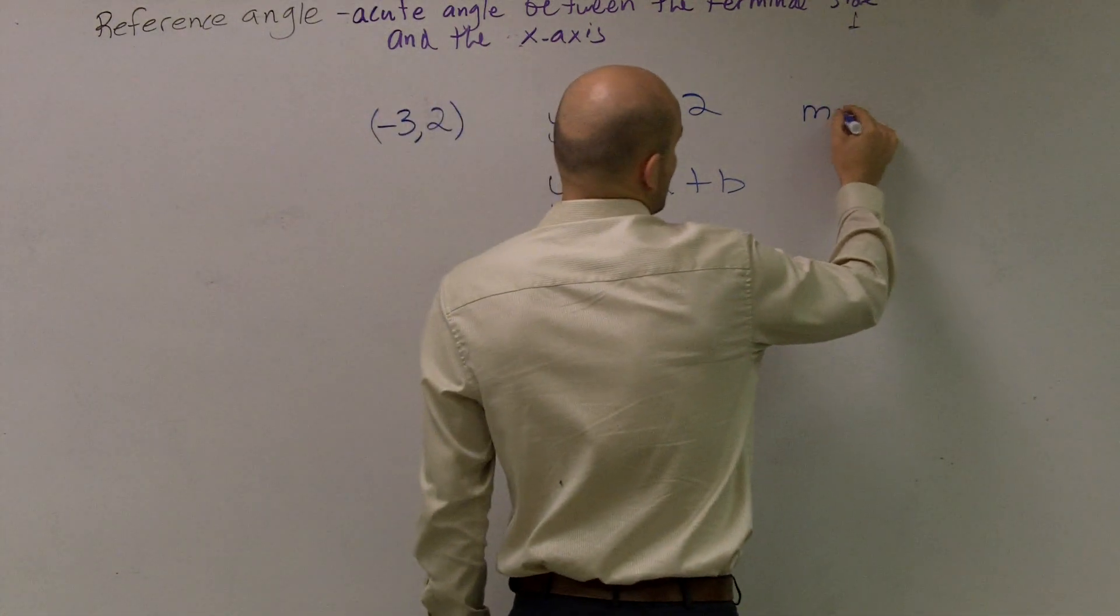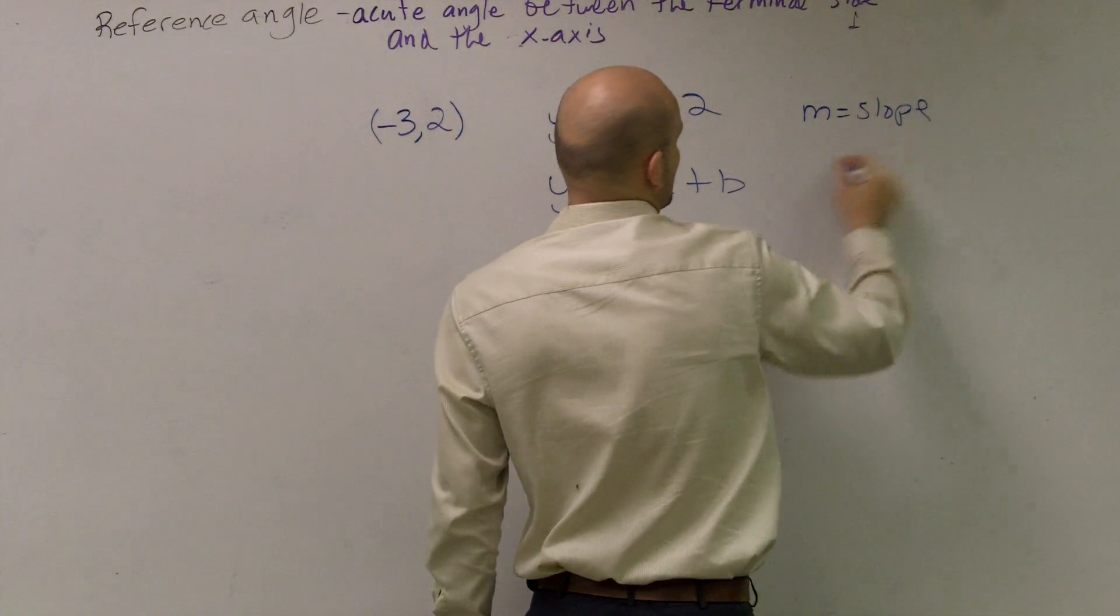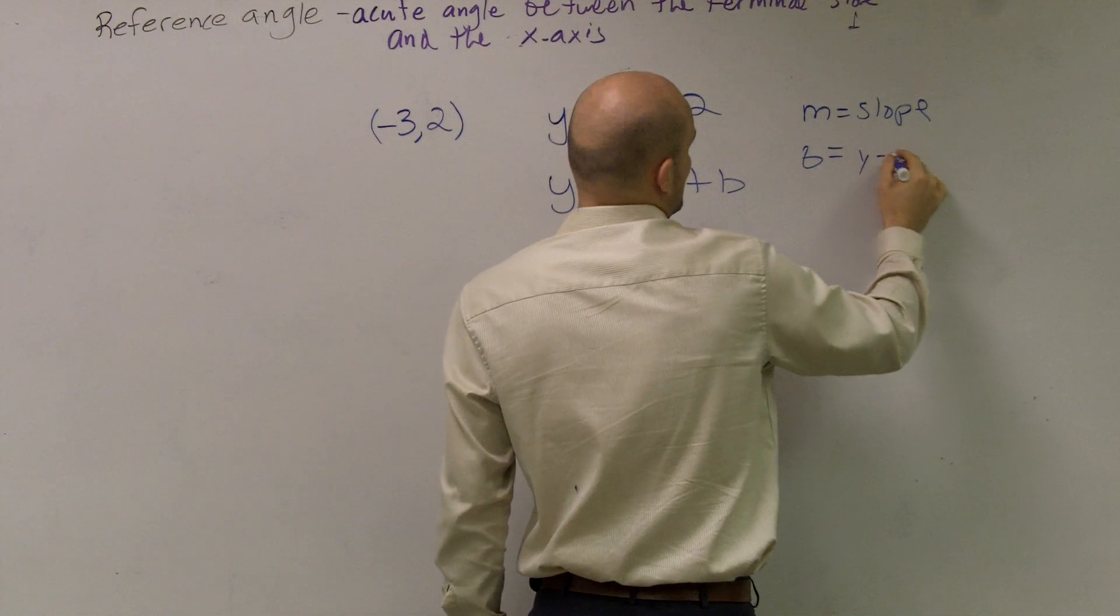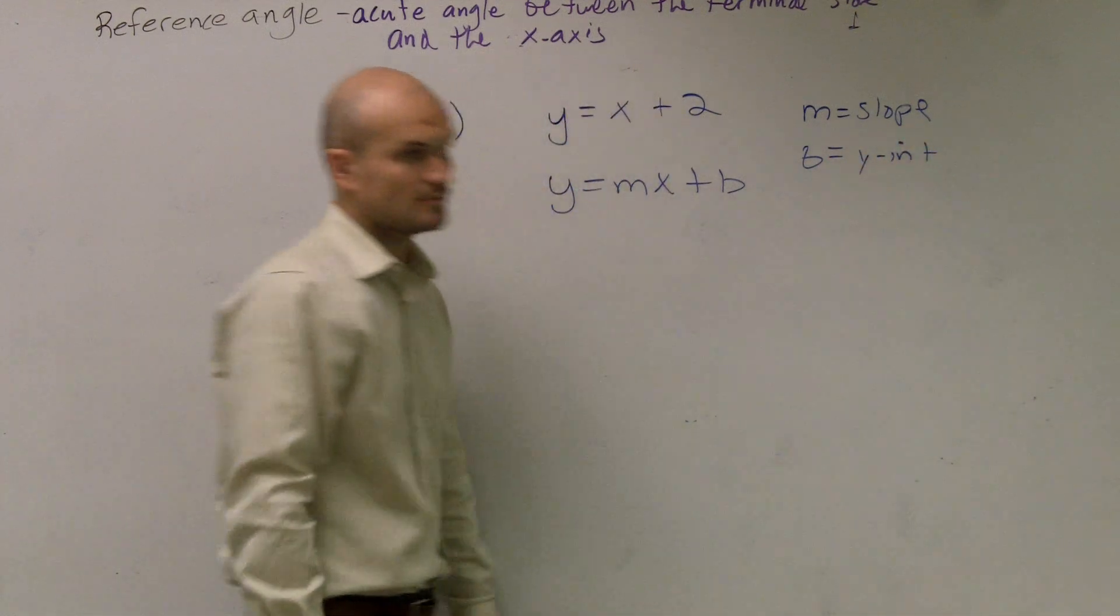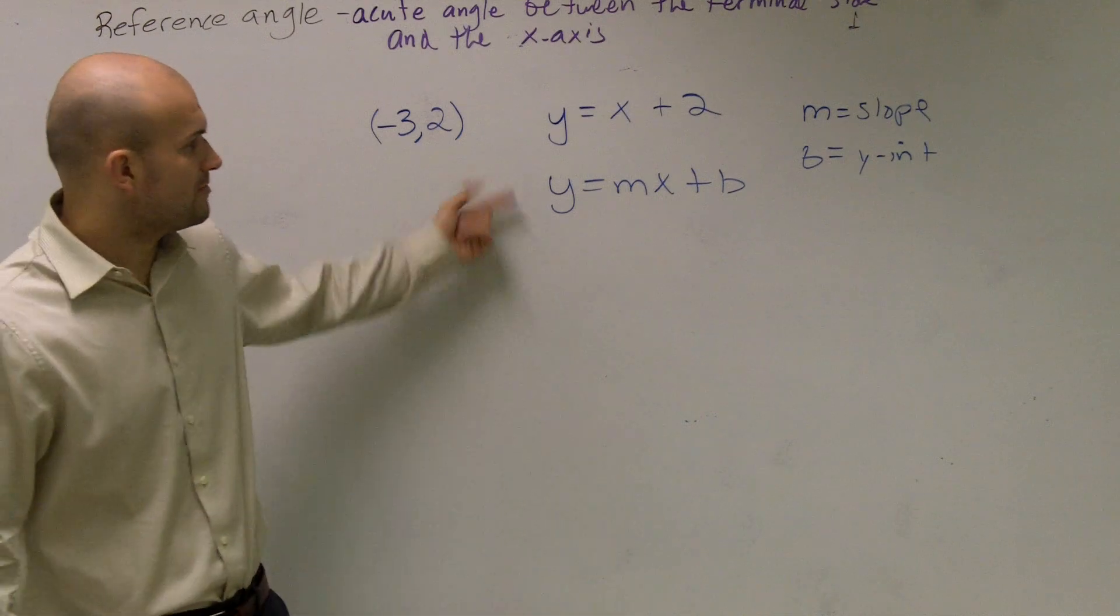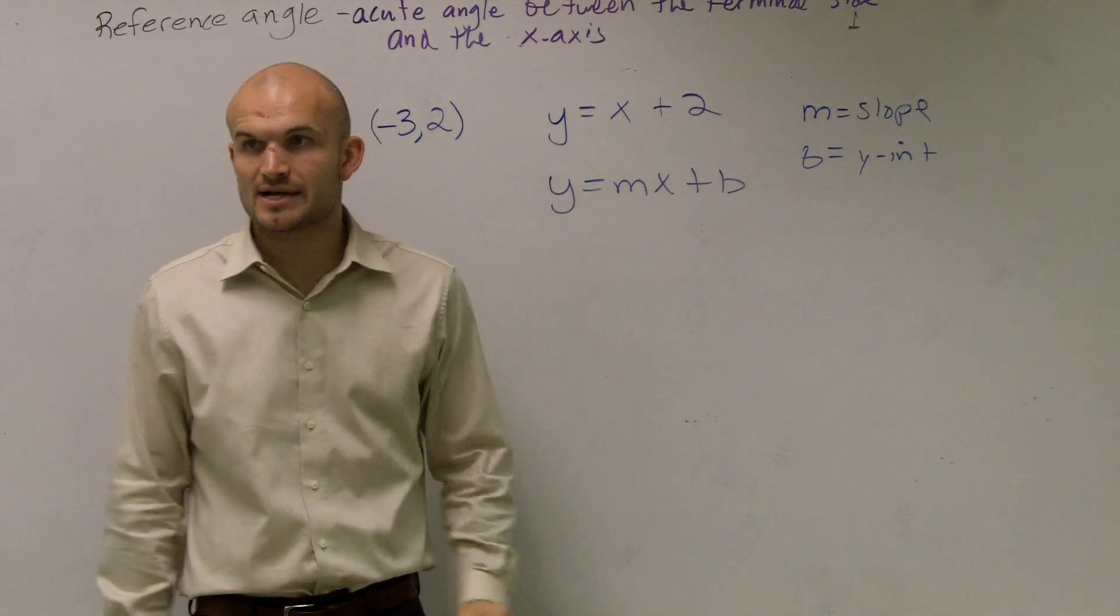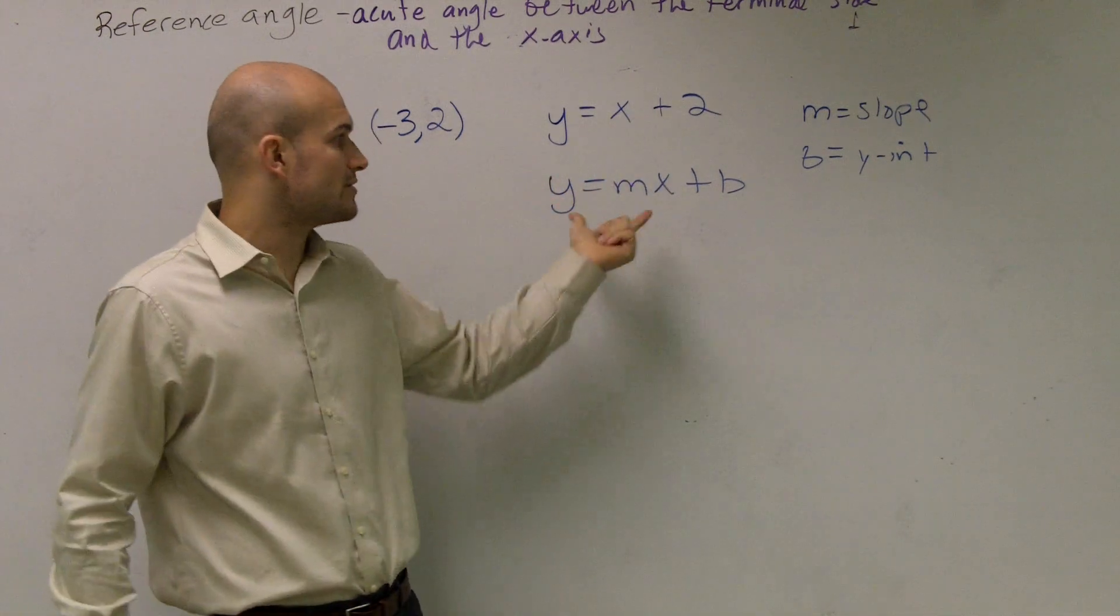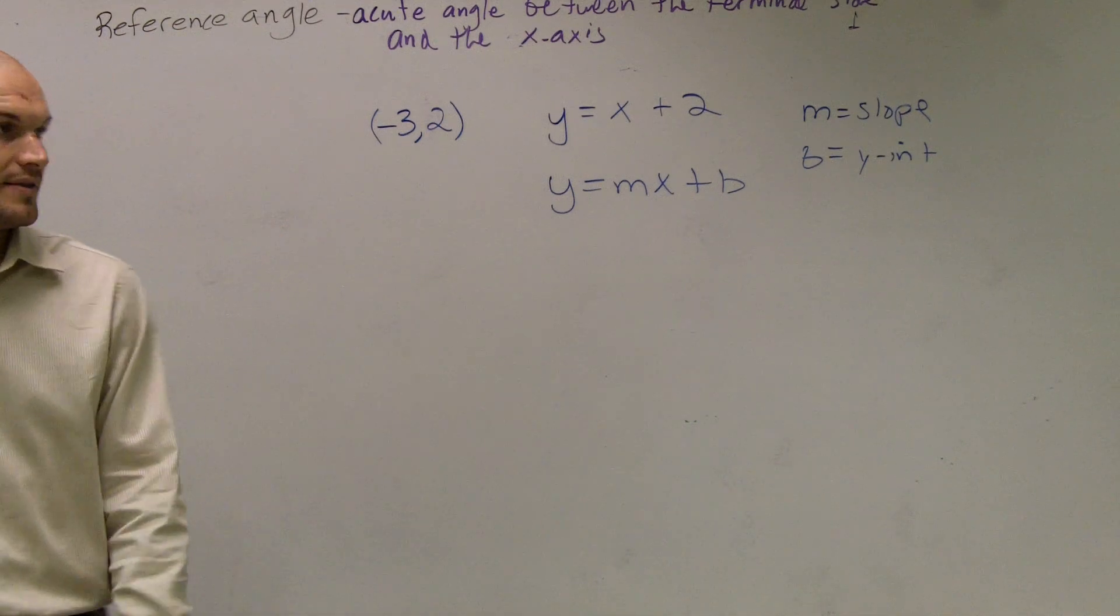But remember, m equals our slope and b equals our y-intercept, right? So on my problem, that's probably the first information I can write down. I know our equation. I can write down y equals mx plus b.